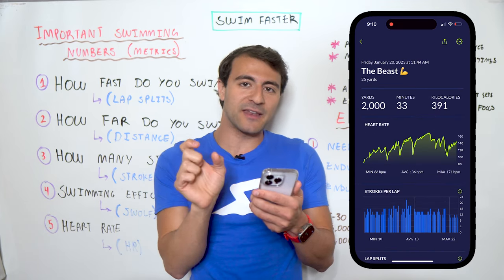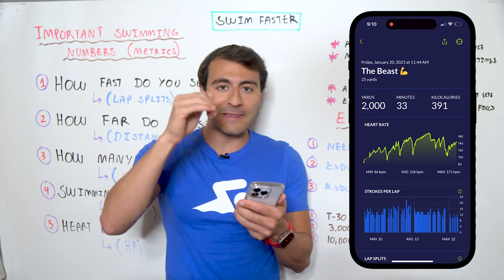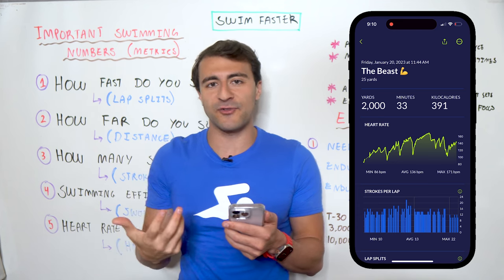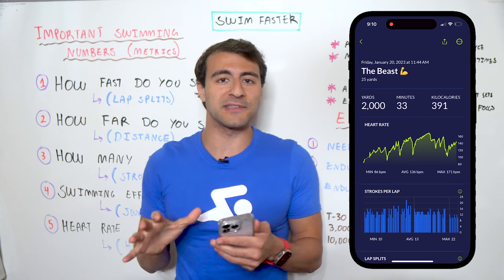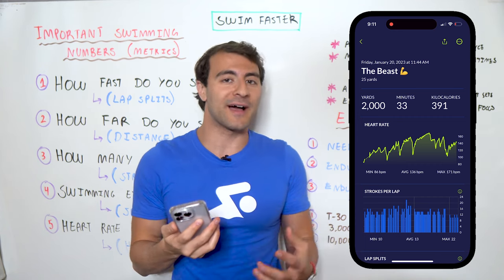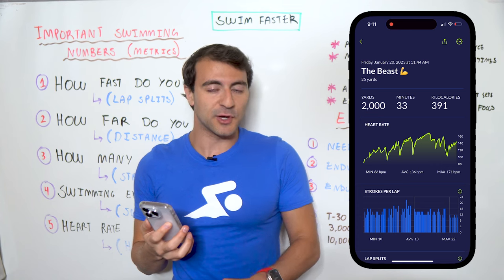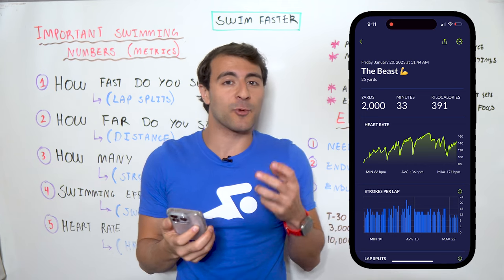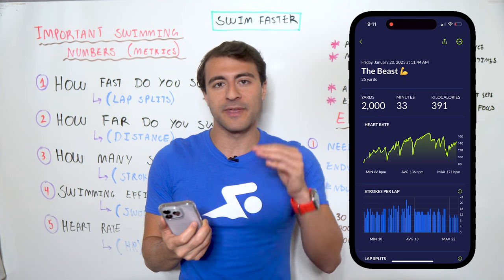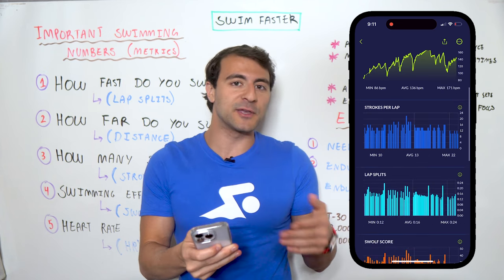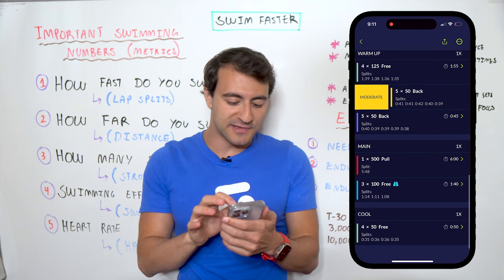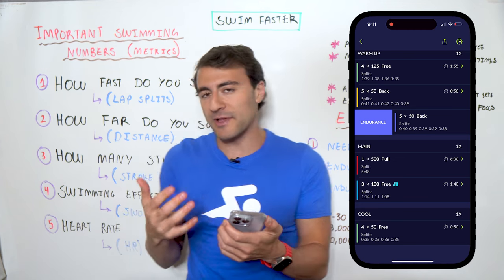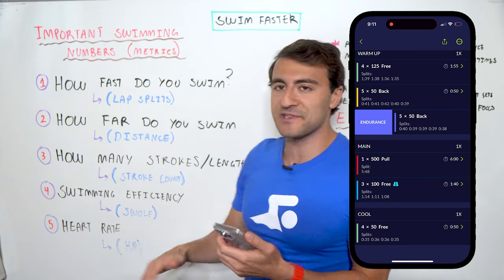After the 500, the next set was three 100s freestyle with fins — my heart rate came down to around 108, creating three short peaks. Then a big drop for that set group with lots of rest. The final set group was four 50s freestyle, visible at the end as four small hills. In the MySwimPro app you can see your heart rate in real time while swimming, helping you moderate effort between sets.